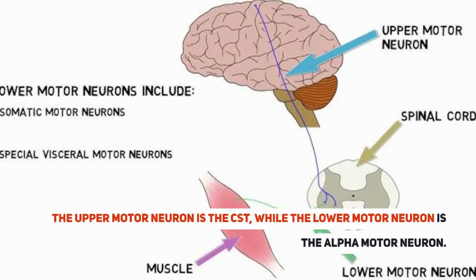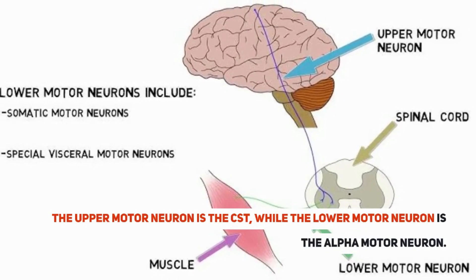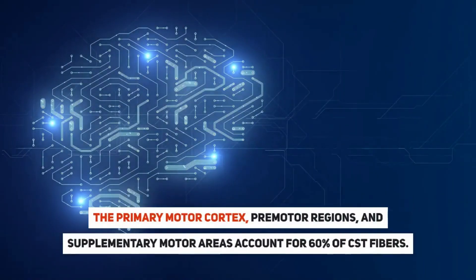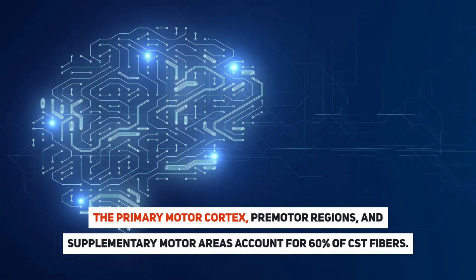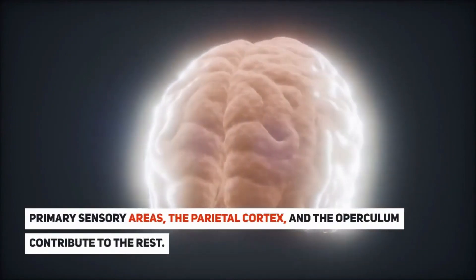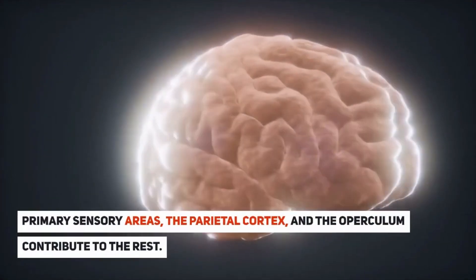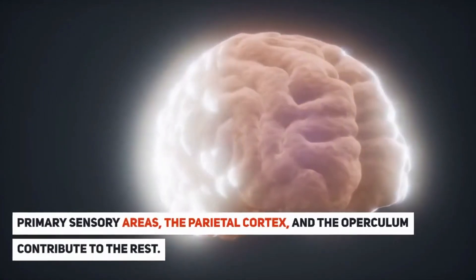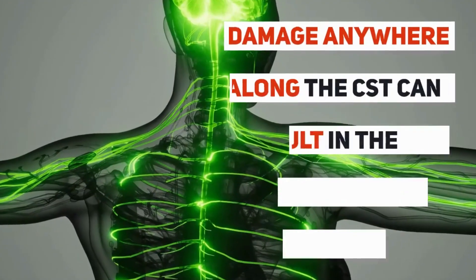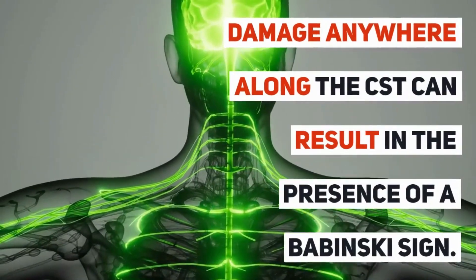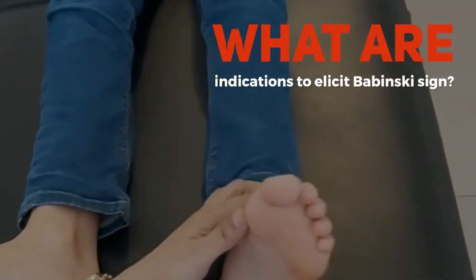The upper motor neuron is the CST, while the lower motor neuron is the alpha motor neuron. The primary motor cortex, premotor regions, and supplementary motor areas account for 60% of CST fibers. Primary sensory areas, the parietal cortex, and the operculum contribute to the rest. Damage anywhere along the CST can result in the presence of a Babinski sign.